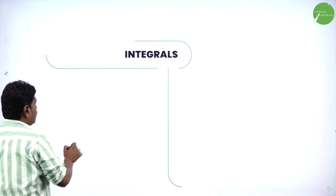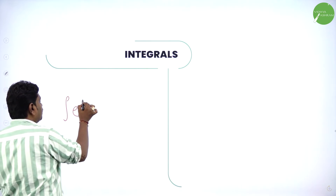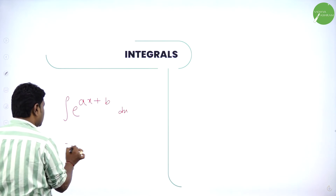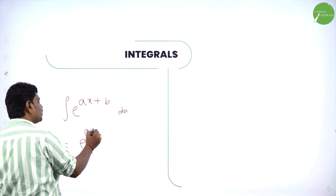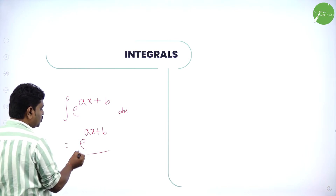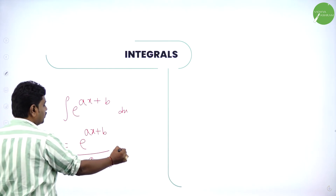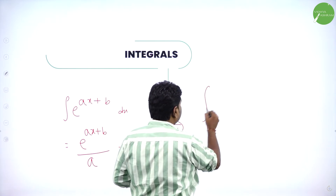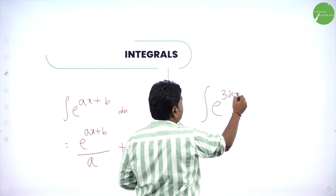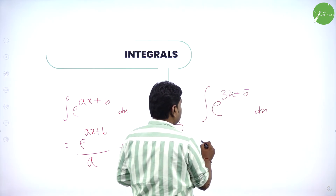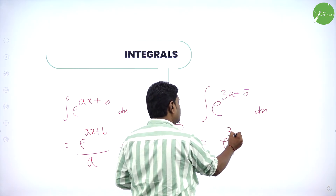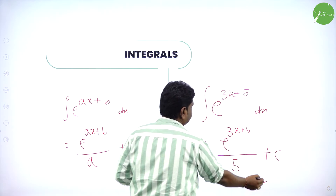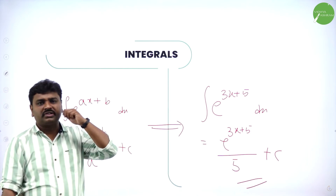In the last problem we used integration of e^(ax+b): integration of e^x is e^x, and integration of e^(ax+b) is e^(ax+b) divided by a plus c, where a is the coefficient of x. So integral of e^(3x+5) = e^(3x+5)/3 plus c. I hope all of you got this.